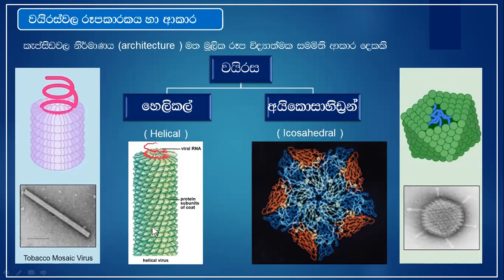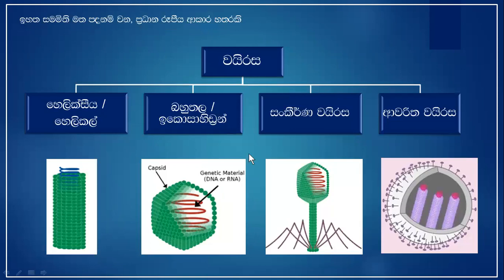There is a virus like this. If you have an electron microscope, you can see it. The virus is a capsule head. You can see it — it is a helical virus.